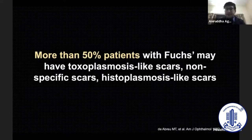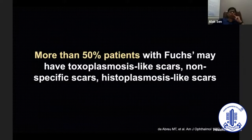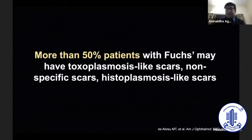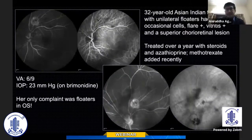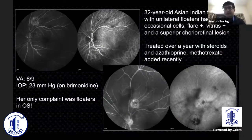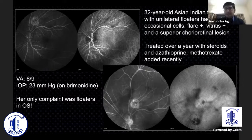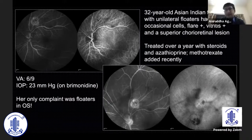More than 50% of Fuchs patients may have posterior segment lesions such as toxoplasmosis-like scars or nonspecific histoplasmosis-like scars. For example, a 32-year-old female presented with only unilateral floaters, occasional cells, and mild inflammation, with a small chorioretinal lesion just above the disc. This patient had been investigated with fluorescein angiography and ICG elsewhere, then received immunosuppression for over a year and developed secondary glaucoma — all for a simple complaint of floaters. She was ultimately diagnosed with Fuchs uveitis and required no therapy.